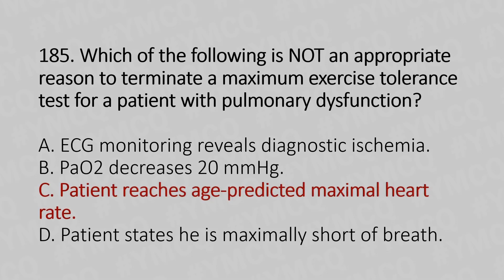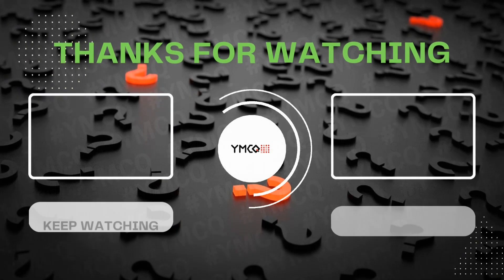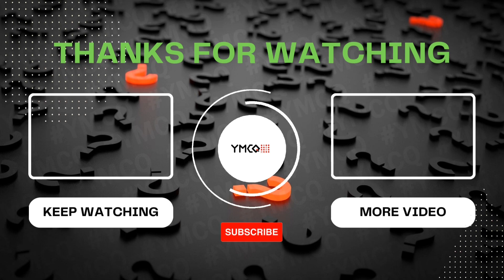And the answer is Option C: patient reaches age-predicted maximal heart rate. A maximum exercise tolerance test is a sign- or symptom-limited test. Achieving the age-predicted maximum heart rate is not a sign or symptom, and therefore does not stop the test.